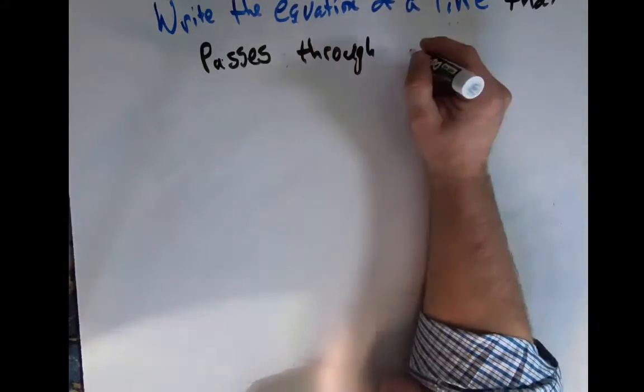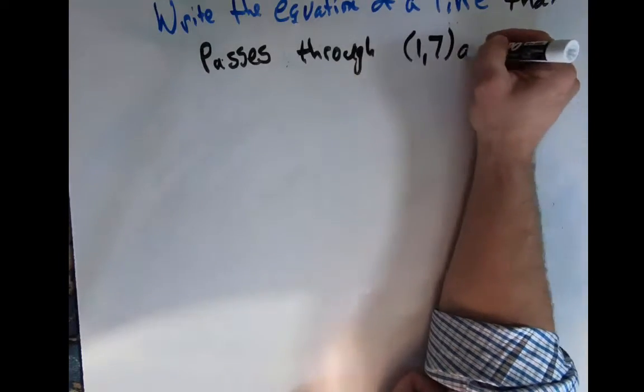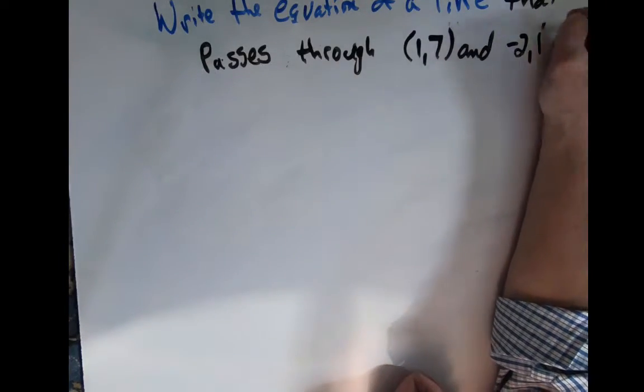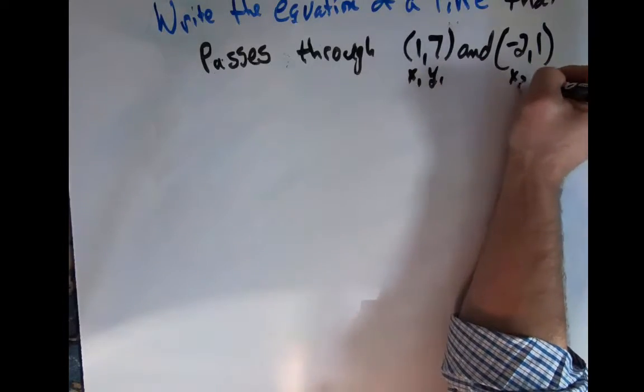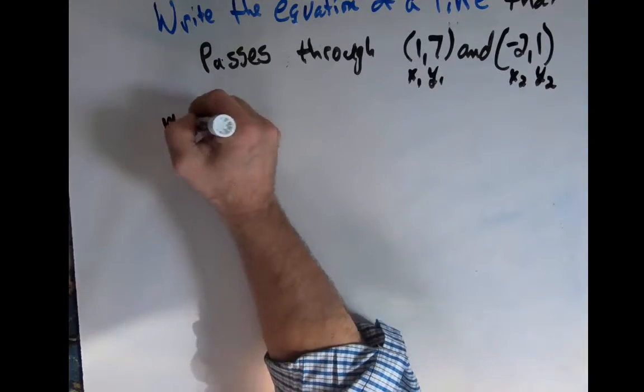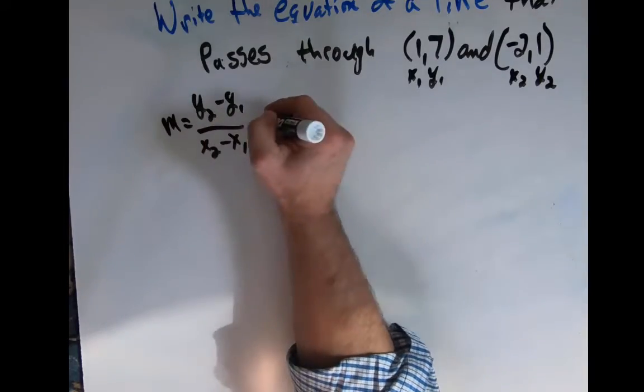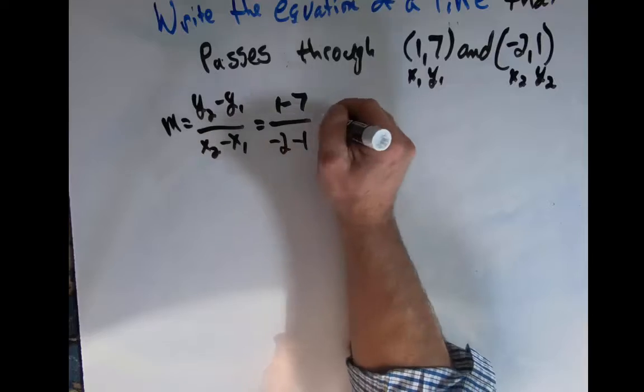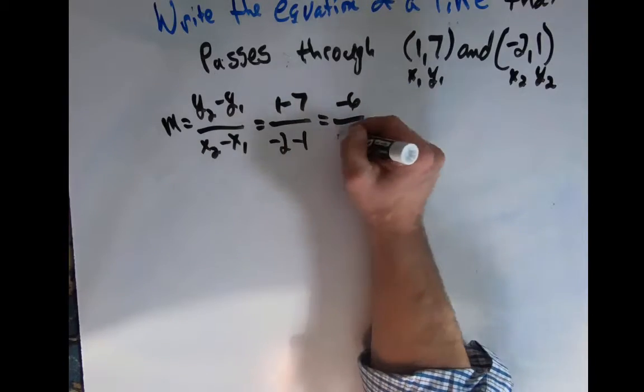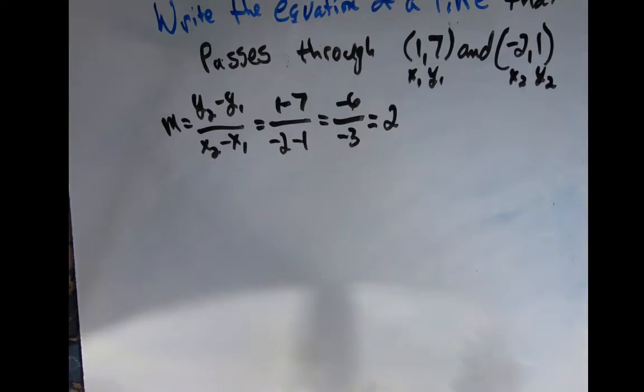What if we just had a line that passed through two different points? So 1, 7 and negative 2, 1. I'm going to find my slope of my line first by going m equals y2 minus y1 over x2 minus x1. We plug those in and we get negative 6 over negative 3, which we know is 2.